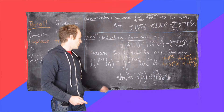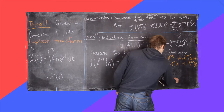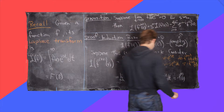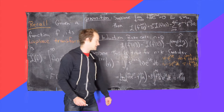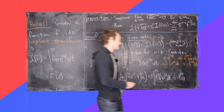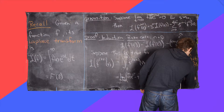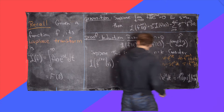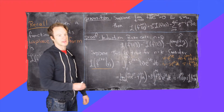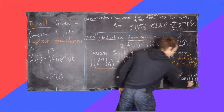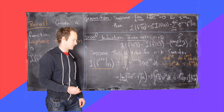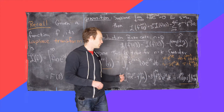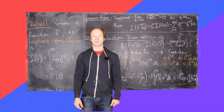This gives us negative the kth derivative of f evaluated at 0, plus s times the Laplace transform of the kth derivative of f. So we have the Laplace transform of the (k+1)th derivative written in terms of the Laplace transform of the kth derivative. I'll clean up the board and then finish this off.